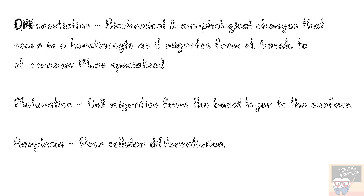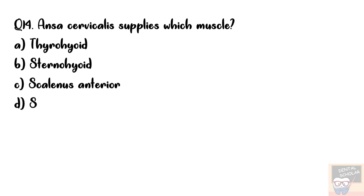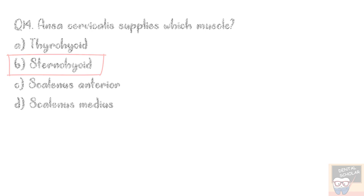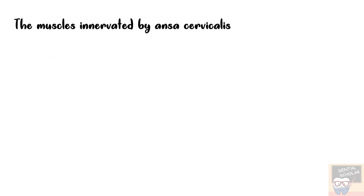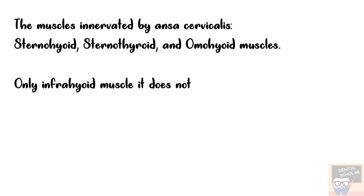Question number 14: Ansa cervicalis supplies which muscle? Options are thyrohyoid, sternohyoid, scalenus anterior, and scalenus medius. The correct answer is option B, sternohyoid. The muscles innervated by ansa cervicalis include sternohyoid, sternothyroid, and omohyoid — it innervates all infrahyoid muscles except thyrohyoid.